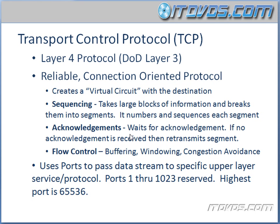TCP also waits for acknowledgements, and if no acknowledgement is received, it retransmits the segment. IP doesn't wait for acknowledgements — IP just sends the information to the correct network. TCP is the watchdog that says: I'm going to wait and make sure this segment was received. The destination host sends back an acknowledgement saying it received the data, and then TCP continues sending. If it doesn't get an acknowledgement, it retransmits that segment.